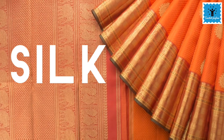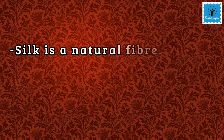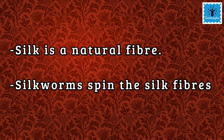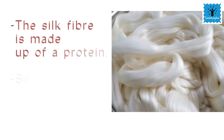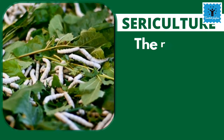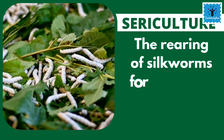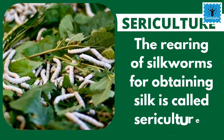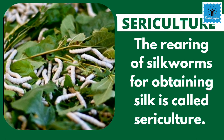The other fiber is silk. Silk is a natural fiber obtained from the silkworm. Silk fiber is made up of a protein, and it is the strongest natural fiber. Rearing of silkworms for obtaining silk is called sericulture, also known as silk farming.